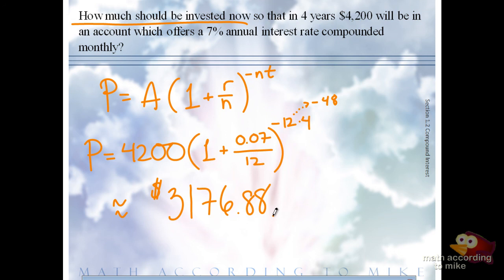So, that means you need to earn around just over $1,000 in interest over that time to get the amount that you need.